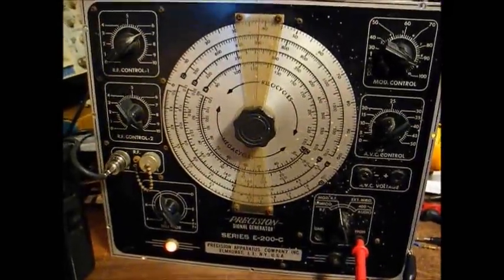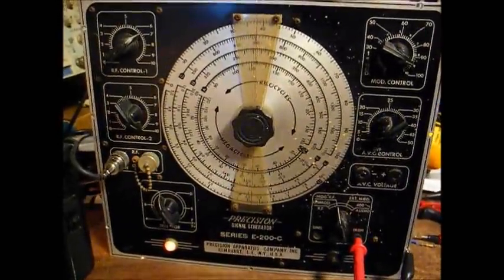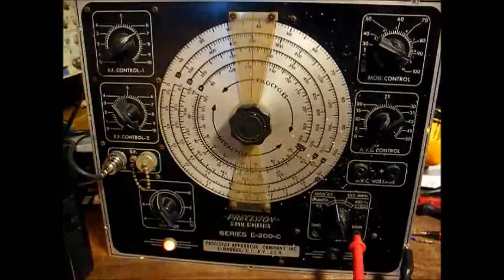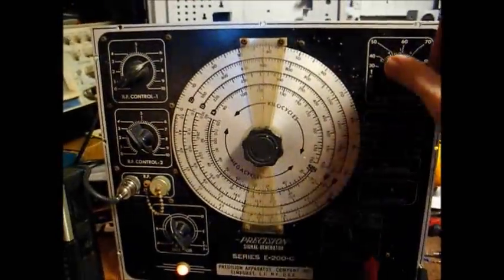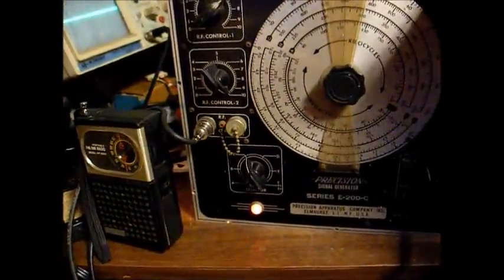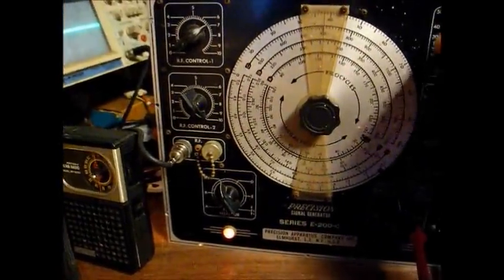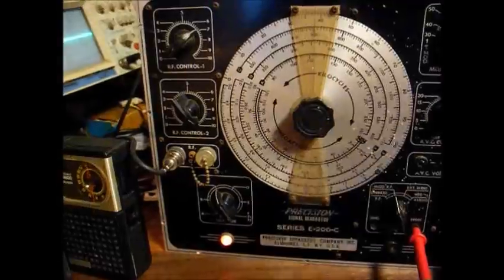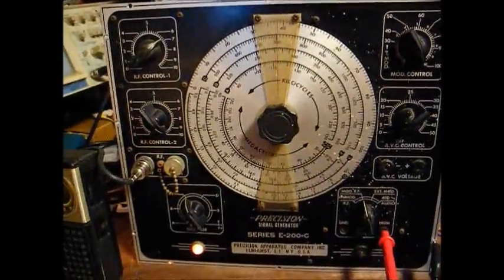Okay, it seems that replacing those resistors with the original carbon composition type helped tremendously. As you can hear, we're getting modulation now that we were not getting before. And now we'll take a look at it on the scope.